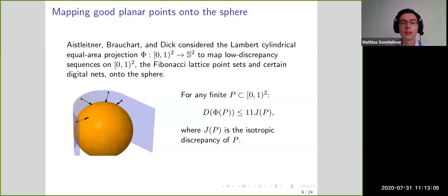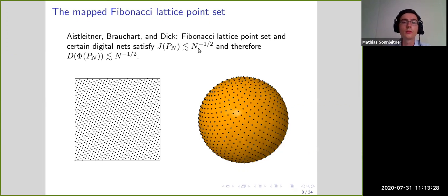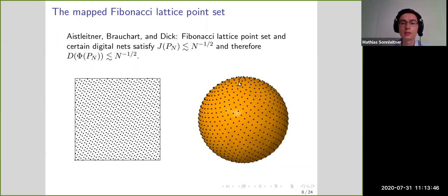Aistleitner et al. managed to show that the Fibonacci lattice point set and certain digital nets have isotropic discrepancy of order n to the minus 1/2, and with the mapping result one can estimate the spherical cap discrepancy by n to the minus 1/2. Here is an image of the Fibonacci lattice point set with 987 points and the mapped point set on the sphere — it looks quite uniform, and one can see that lines get mapped to spirals on the sphere.